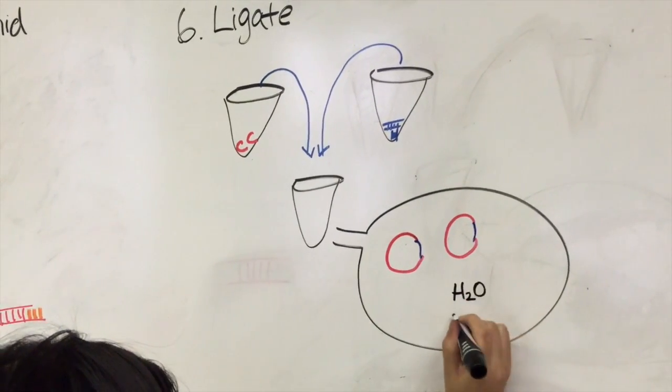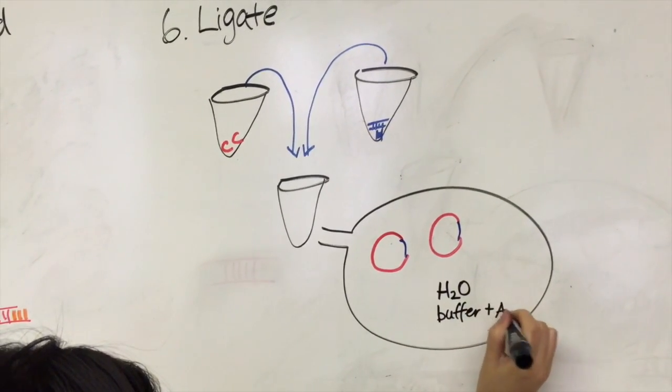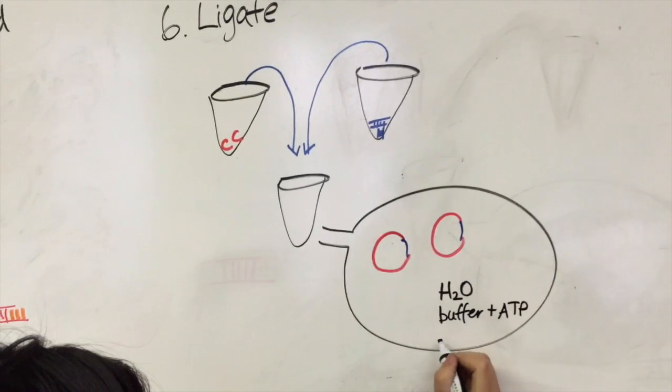Four main ingredients are needed to ligate DNA fragments together: water, compatible DNA fragments, buffer with ATP, and T4-DNA ligase.